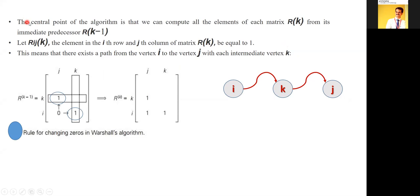The central point of this algorithm is that we can compute all elements of each matrix, because we will be coming across stages of a matrix — similar to stages of a vertex in the multi-stage graph. This also comes under dynamic programming; we solve the problem in stages. The matrix will be improvised at each stage from its immediate predecessor matrix.